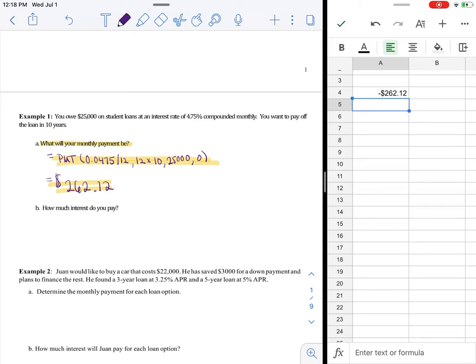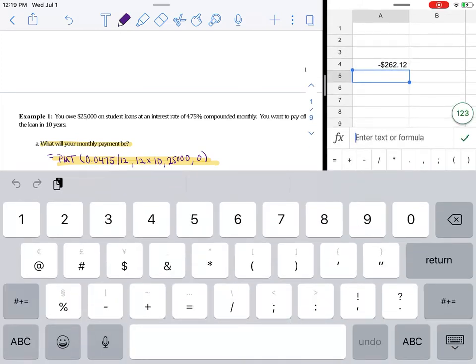Now, how much interest did you pay, or do you pay? Well, if we are paying $262.12 per month, per month, and we're doing this for 10 years...